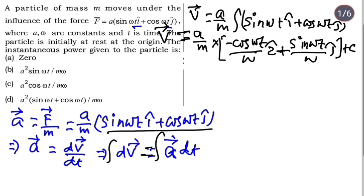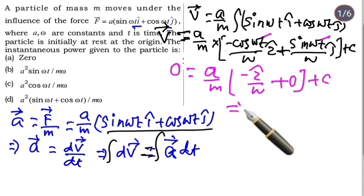This is our velocity vector. Initially at time zero, the velocity is zero. So putting t equals zero, velocity is zero, and cos zero equals one, so we can write C equals a by mω i cap. This is equation one.